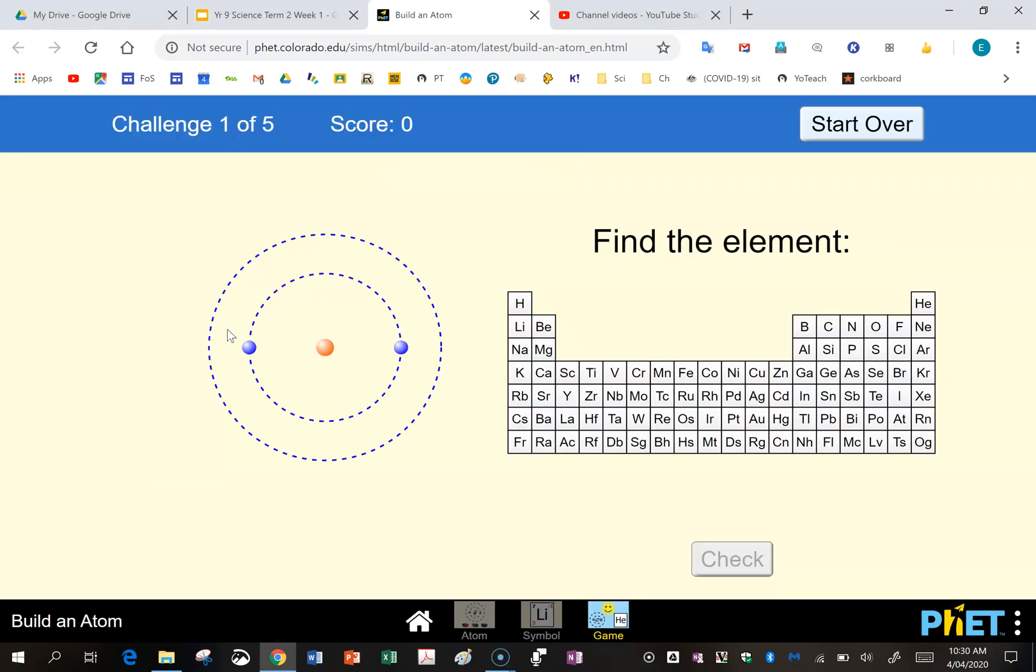So if we look at the first game, this one is asking us to find the element. To find an element you need to know how many protons it has. Now the red is the protons, so it is hydrogen because it has one proton. Remember the number of protons is the place in the periodic table.